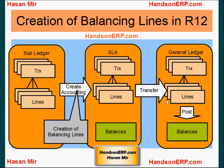Keep in mind that the posting program will still create balancing lines for journals that you are directly entering in the general ledger module or journals coming from other sources. But anything passing through subledger accounting will have balancing lines created at that point.